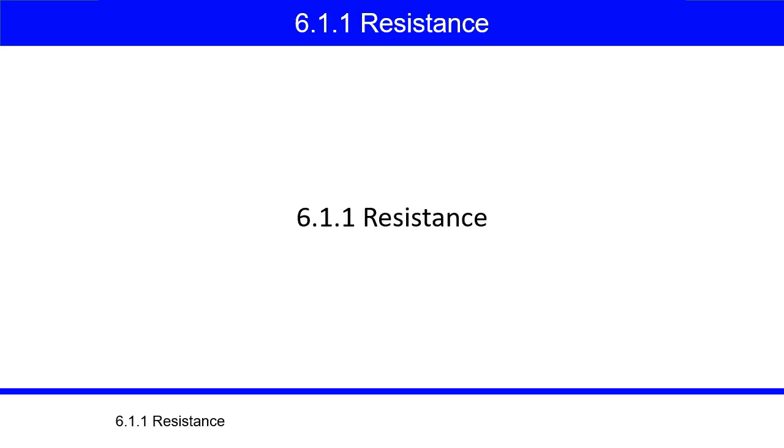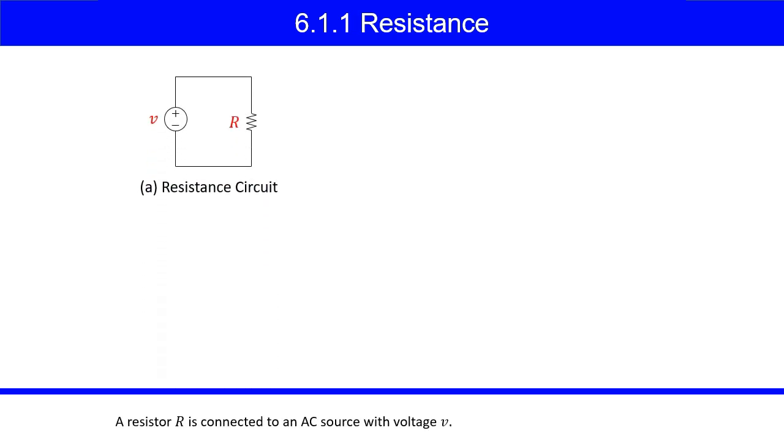Subsection 6.1.1, Resistance. A resistor R is connected to an AC source with voltage V.